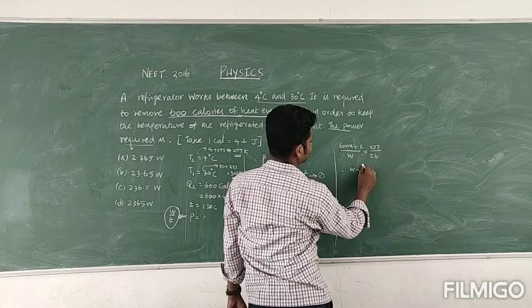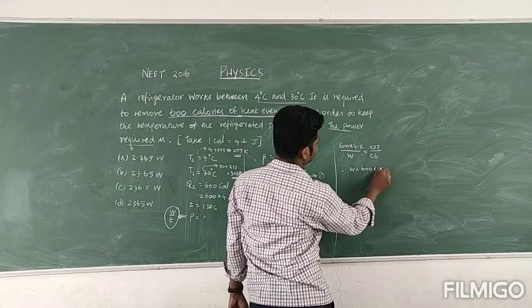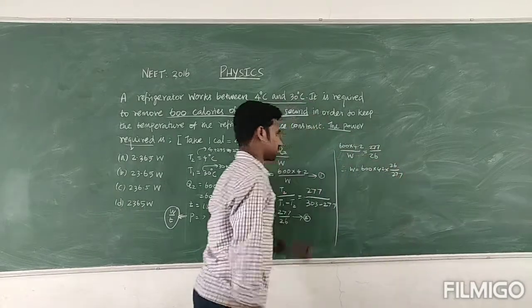Therefore work done is equal to 600 into 4.2 into, this is moving to this side, then 26 divided by 277.